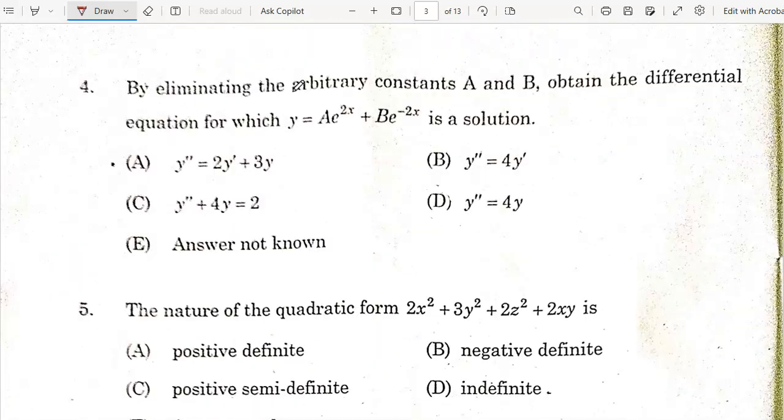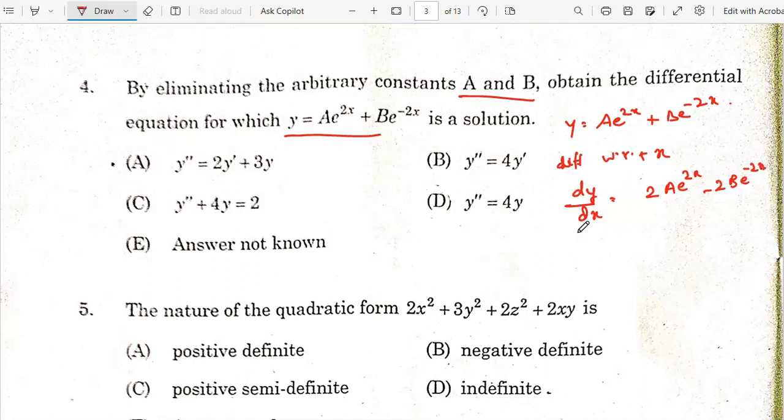Next question: By eliminating the arbitrary constants A and B, obtain the differential equation for which y equals A e to the power 2x plus B e to the power minus 2x. Differentiate both sides with respect to x. You get dy/dx equals 2A e to the power 2x minus 2B e to the power minus 2x. Again differentiate with respect to x, you get d squared y by dx squared equals 4A e to the power 2x plus 4B e to the power minus 2x. The solution is y double dash equals 4y, so option D is the correct answer.